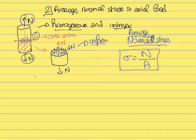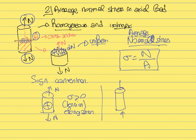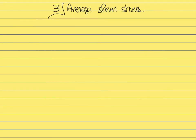The sign convention remains the same as previously shown. If you have a cylinder with a force pulling it apart, that gives a positive stress inducing tension and elongation. On the other hand, if the force is pushing inward, that gives a negative normal stress, a compression, and a shrinkage — the size of the material decreases. That is the negative sign convention for the normal stress.